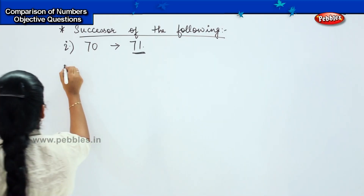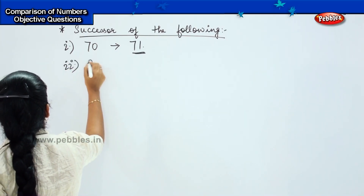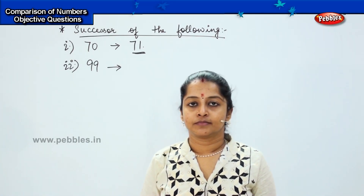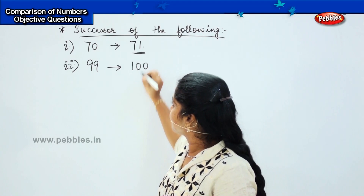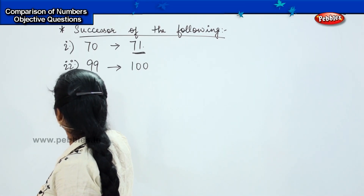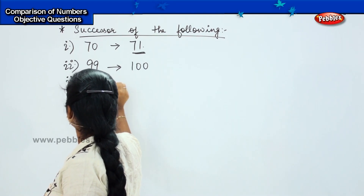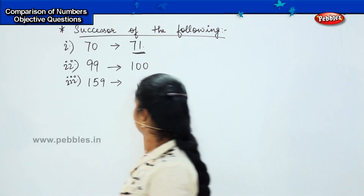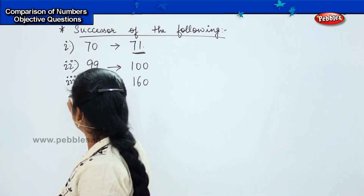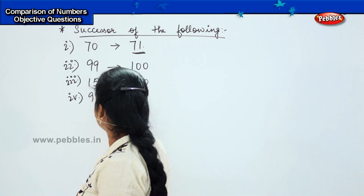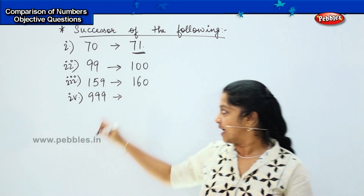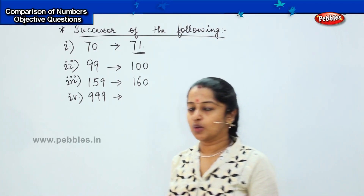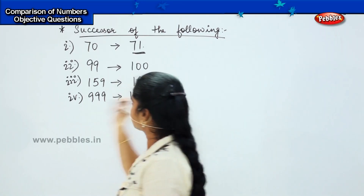Shall I give you the next one? Your next one is 99. Can you tell me the successor of 99? It's 100. Can you tell me the successor of 159? It is 160. Very good. Can you find the successor of 999? What is the successor? It will be 1000. Yes, it will be 1000.